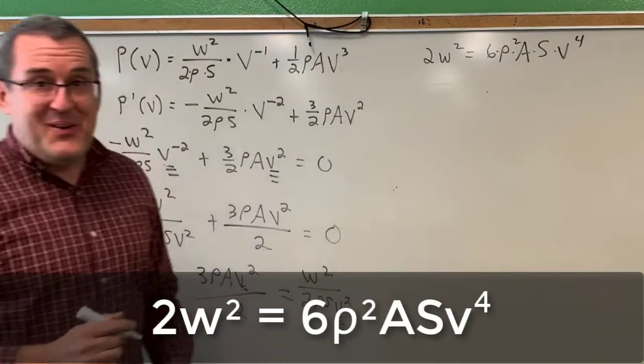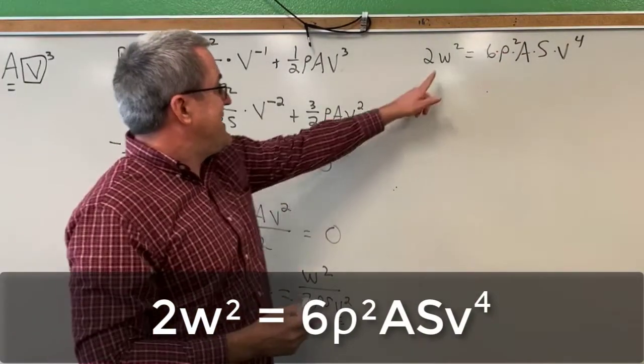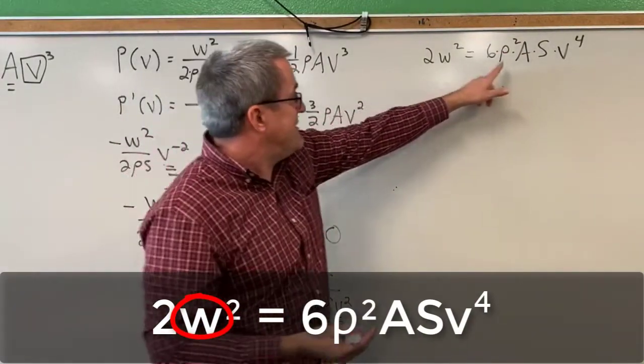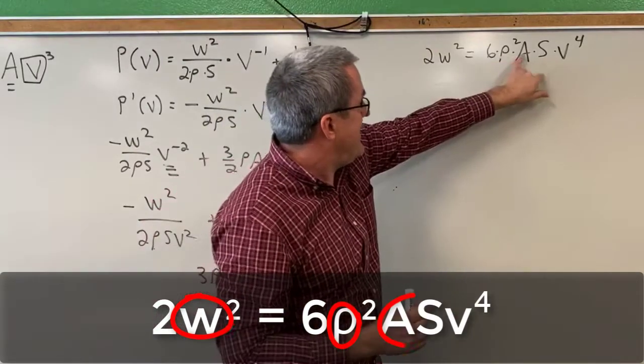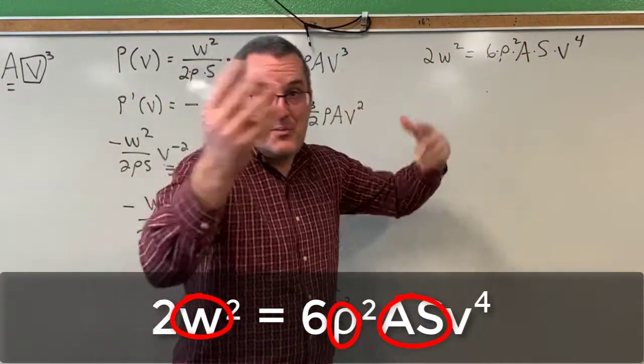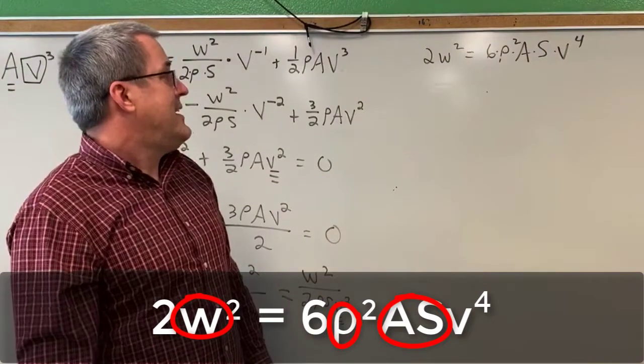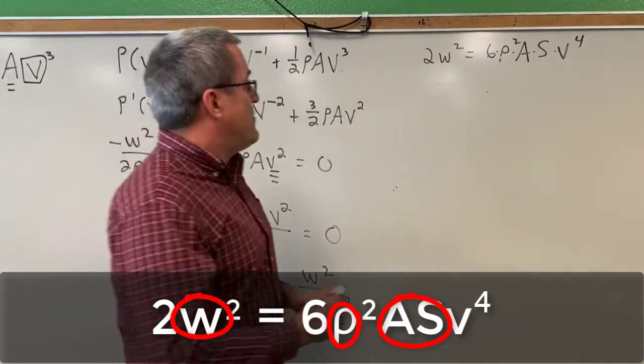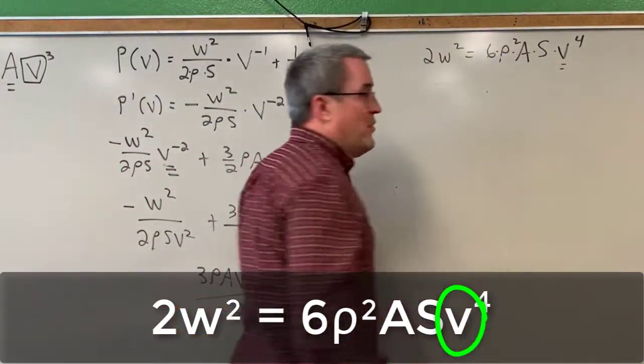Now again, don't be scared by all these letters, it's just constants. Weight of the bird, constant. Density of the air, constant. A and S, two constants that are associated with the size and shape of the birds that we're studying. And so those are all just constants. We are still just solving for V.